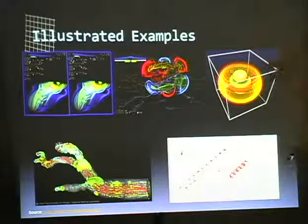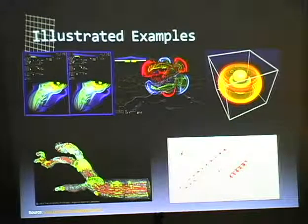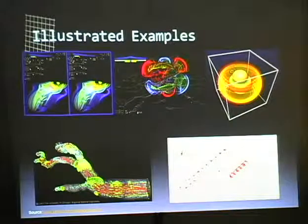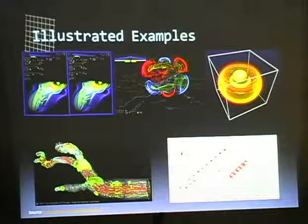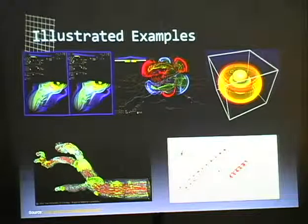The one on the bottom left is a simulation of blood flow through an artery. They can simulate the effect of a clot or a buildup of cholesterol — how your blood is going to react based on whatever parameters they put in. The one on the bottom right is protein folding within a carbon nanotube, which is a newer project they're working on. So here are some examples of what's currently being done in the research community.